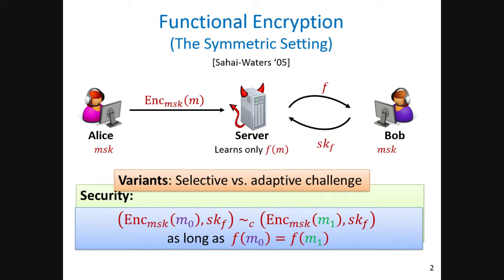There are a couple of variants for this definition depending on who chooses M0 and M1 and when. Two of the most common formalizations are known as selective security and adaptive security. A selectively secure scheme is one in which the adversary commits to the challenge pair M0 and M1 ahead of time, before any interaction with the scheme. Adaptive security ensures that even if the adversary has access to the scheme, interacts with it, and only then commits on the challenge, the scheme is still secure. Of course, adaptive security is much harder to get, but it's also much better.